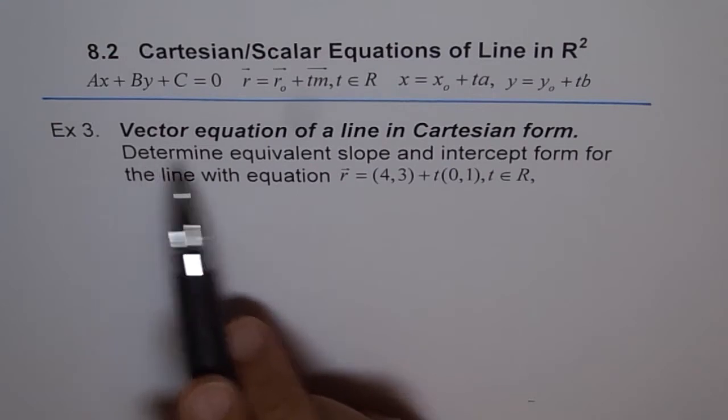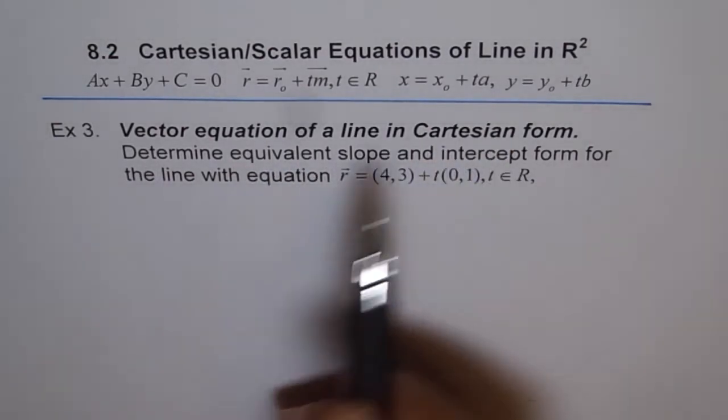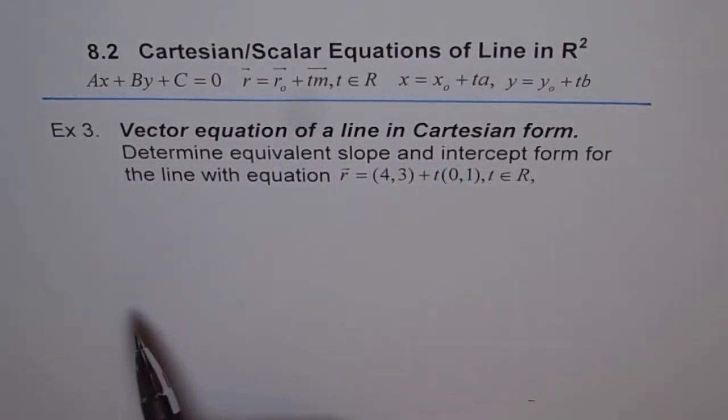Example 3: vector equation of a line in Cartesian form. So that is what we are going to do. From vector equation, we are going to write Cartesian form equation.